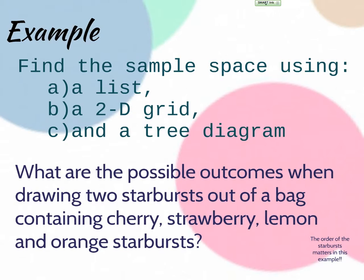I know a lot of times we talk about probability, it's like let's flip a coin, let's roll a die, let's spin a spinner. I always think about food and candy. So for our example here, what are the possible outcomes when drawing two starbursts out of a bag containing cherry, strawberry, lemon, and orange starbursts? So your traditional pack, not the all red.